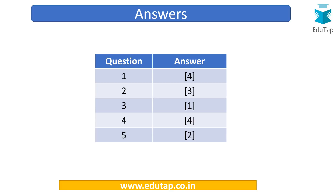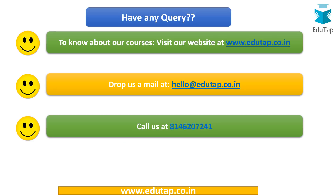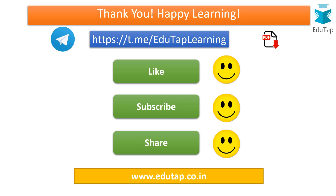We are done with five questions — tally your score and have a look at the answers. That's it — five MCQs from another important ESI section. For any queries, visit our website www.edutap.co.in or drop us a mail there. Our contact number is 8146-207-241 — you can WhatsApp or call us. If you find the content useful, please like, subscribe and share the video. The PDF of this lecture and all other lectures is available in the description via our Telegram channel link. Happy learning and thank you for being here.